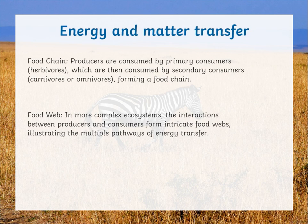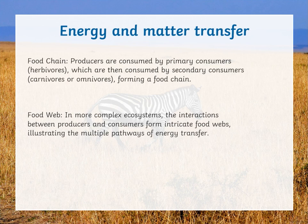Firstly, we are going to talk about food chains. In a food chain, we have at the beginning producers, which are consumed by primary consumers — the herbivores — which are then consumed by secondary consumers, which can be carnivores or omnivores, forming a food chain.